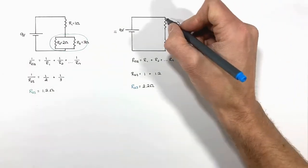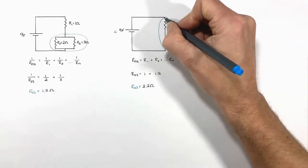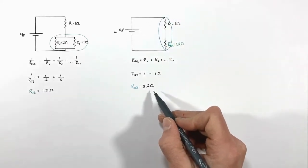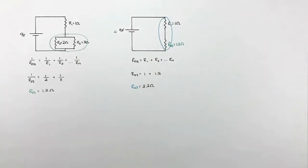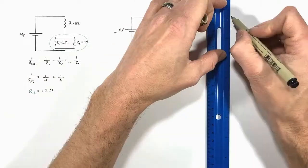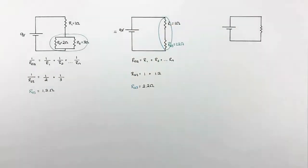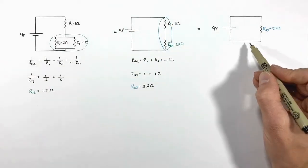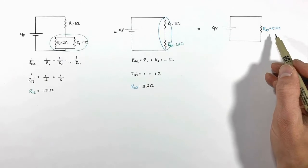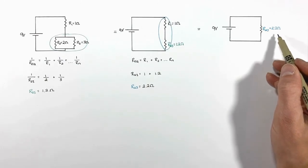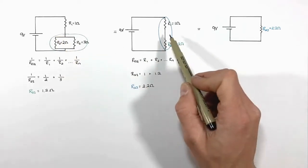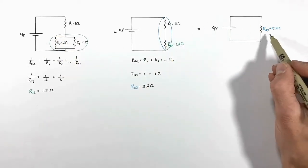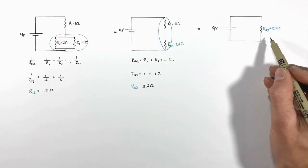We've taken these two resistors and combined them into a single equivalent resistor, leaving us with a circuit where the total resistance is 2.2 ohms. So we've taken these three resistors, combined them, and then combined them again down to what we call the equivalent resistance.